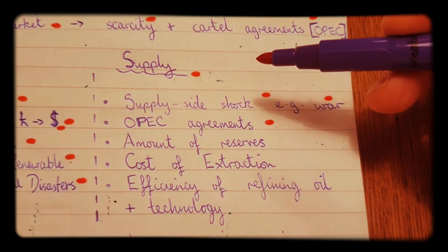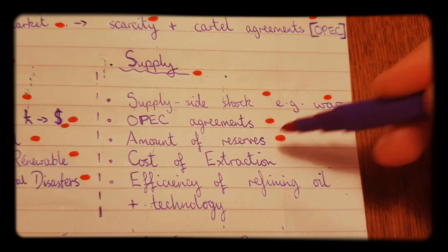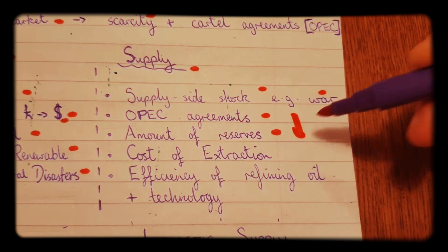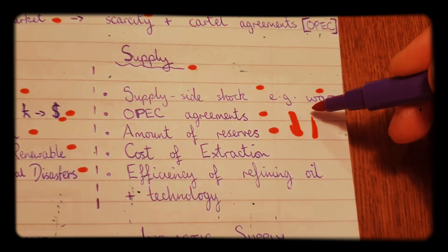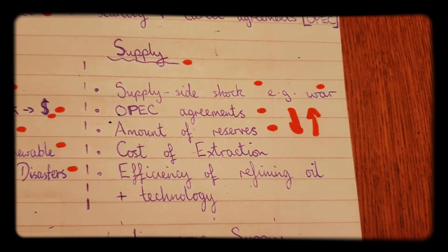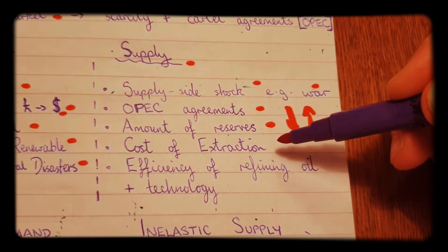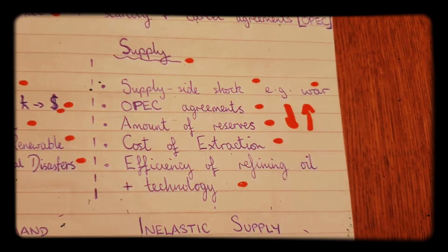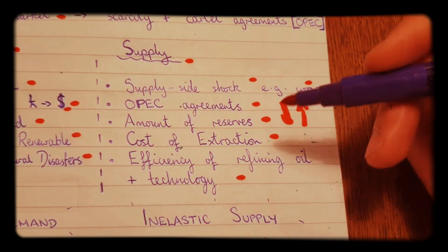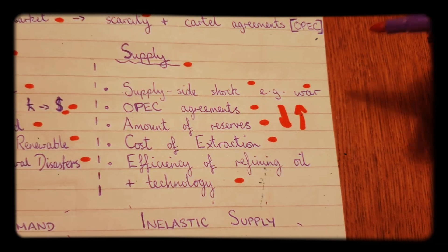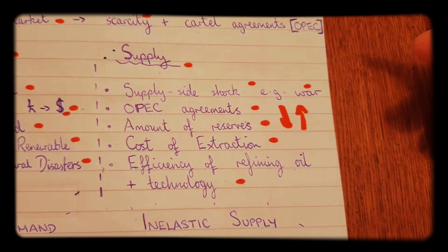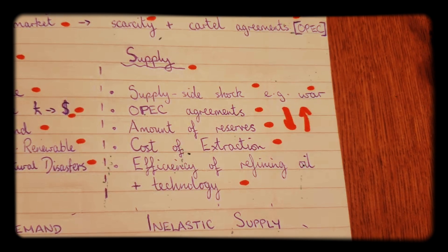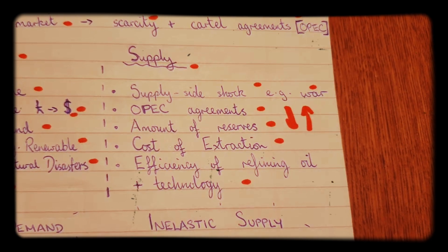The other thing that affects the supply of oil is the amount that there is in reserve — over time that will start to fall, and as reserves fall, we should experience prices starting to increase. Another factor is the cost of extracting oil, and also the efficiency of refining oil and the technology behind that. If the cost of extraction rises, oil prices will go up. If the efficiency of refining gets better, we'd expect the supply of oil to increase.